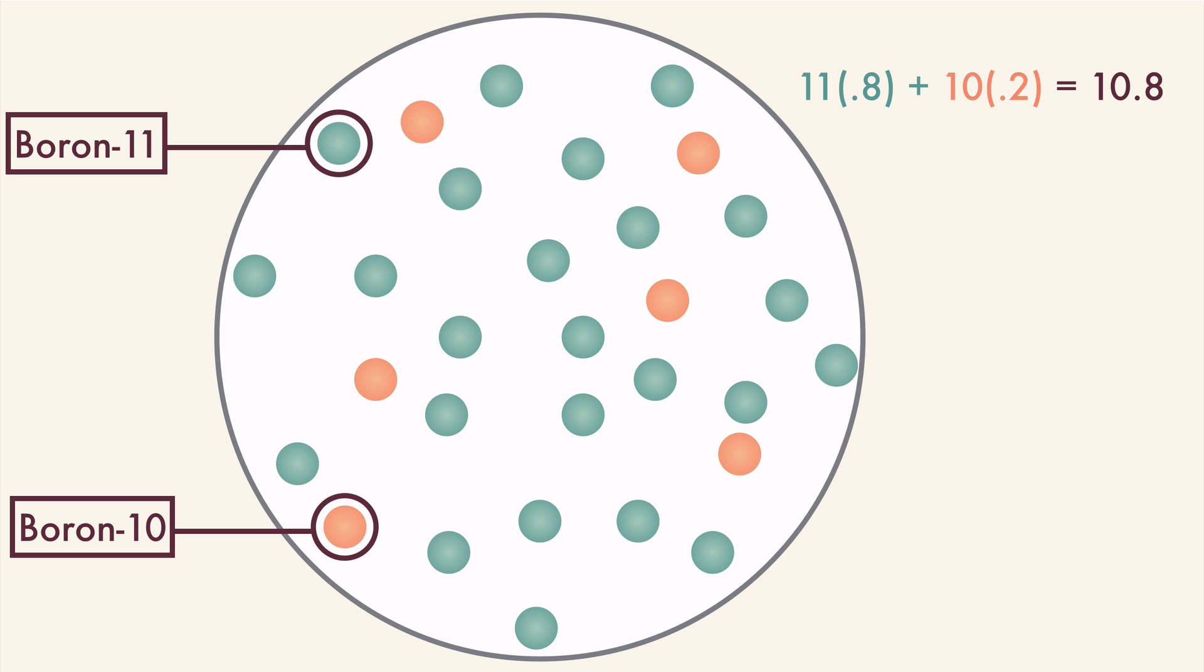10.8 is closer to 11 than it is to 10, and that tells us that there are probably more boron 11 atoms in nature than boron 10. And this is the number that we see on the periodic table.